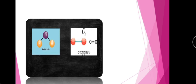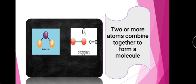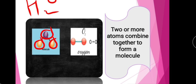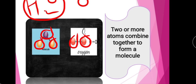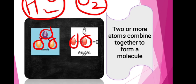When two or more atoms combine together, they form a molecule. In this diagram you can see one atom of hydrogen, one more atom of hydrogen — so total two atoms of hydrogen — and one atom of oxygen. Together these three atoms form a single molecule of water. Similarly, one atom of oxygen and another atom of oxygen — two atoms of oxygen — together form one molecule of oxygen. So when two or more atoms combine together they form a molecule.